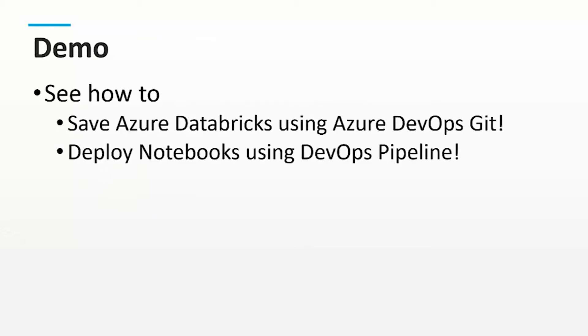The DevOps pipeline allows you to deploy notebooks to different environments. Let's say you have coding only in development and people save their code back to Git, and you want to release that to test so people can test it and find the bugs.